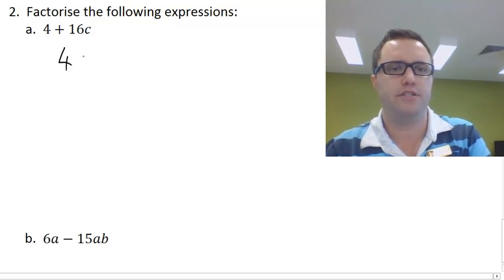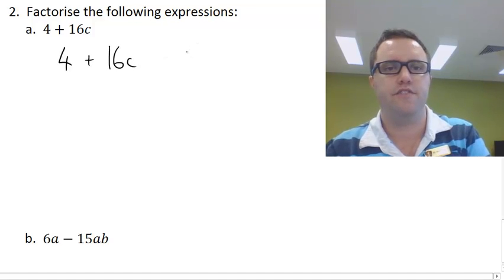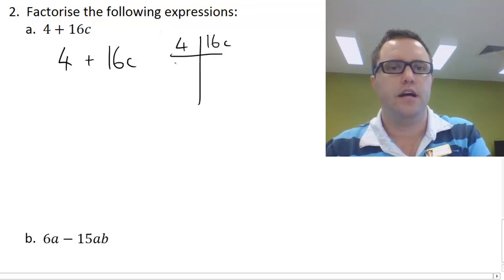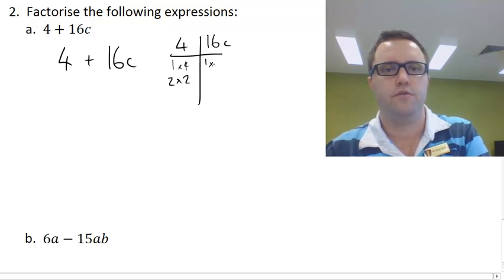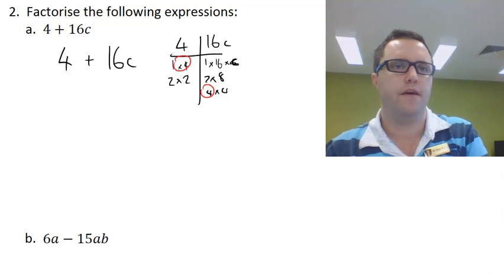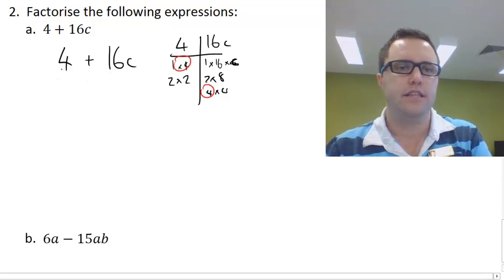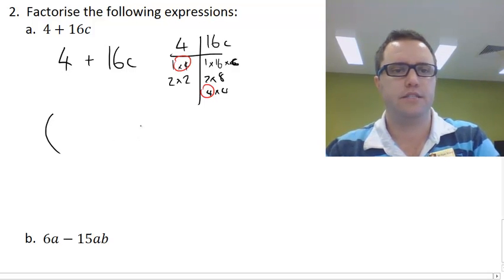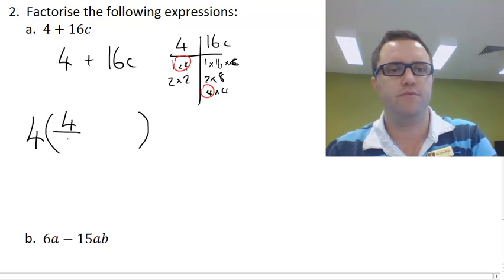I like rewriting them, 4 plus 16C. The first thing we're going to need to ask ourselves is the highest common factor of 4 and 16C. Well, 1 times 4, 2 times 2, 1 times 16 times C, 2 times 8 and 4 times 4. We can see easily that it is 4. So what we're doing now is we're going to write some brackets and put a 4 out the front, and then divide each of our terms in here by the highest common factor. So 4 over 4 plus 16C over 4.